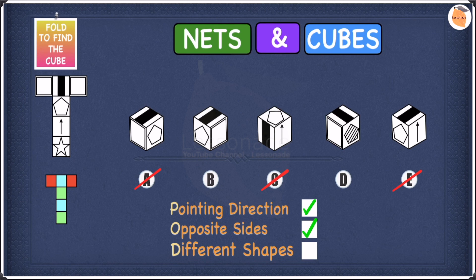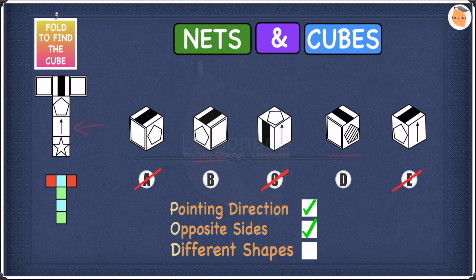Different shapes is when you find a shape in one of the cube options that does not appear in the net. Let's start with B. In B we have the pentagon — that's fine — we have the stripe — that's right — and we also have the square. They're all the same shapes as in the net. So we can keep B.